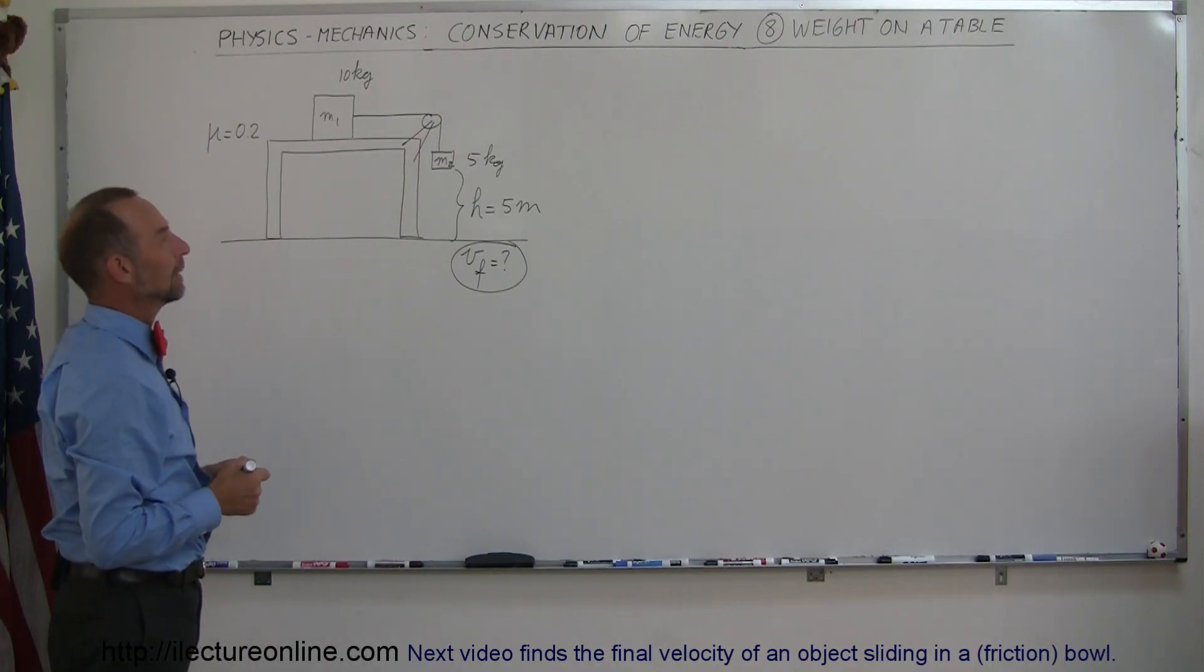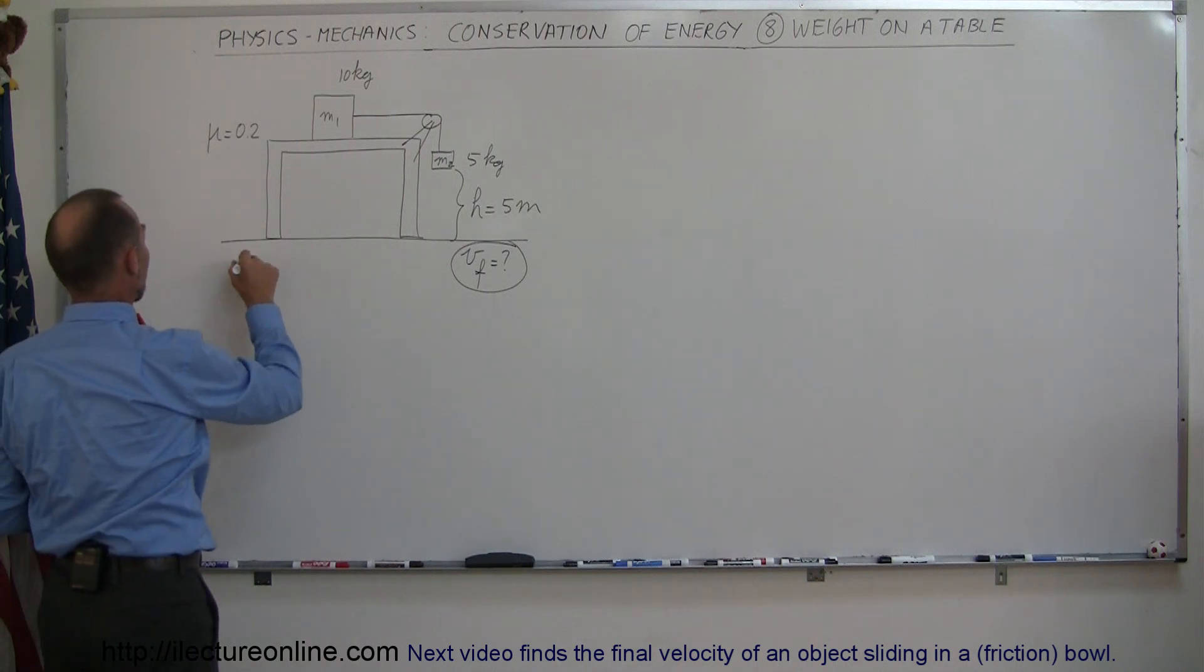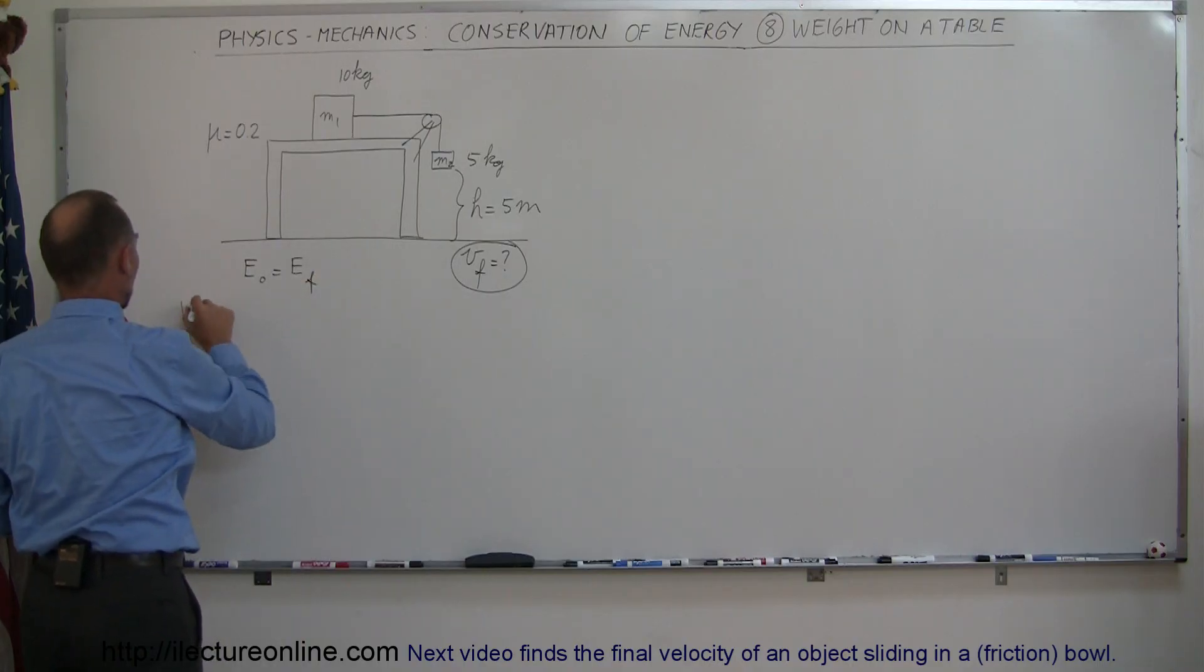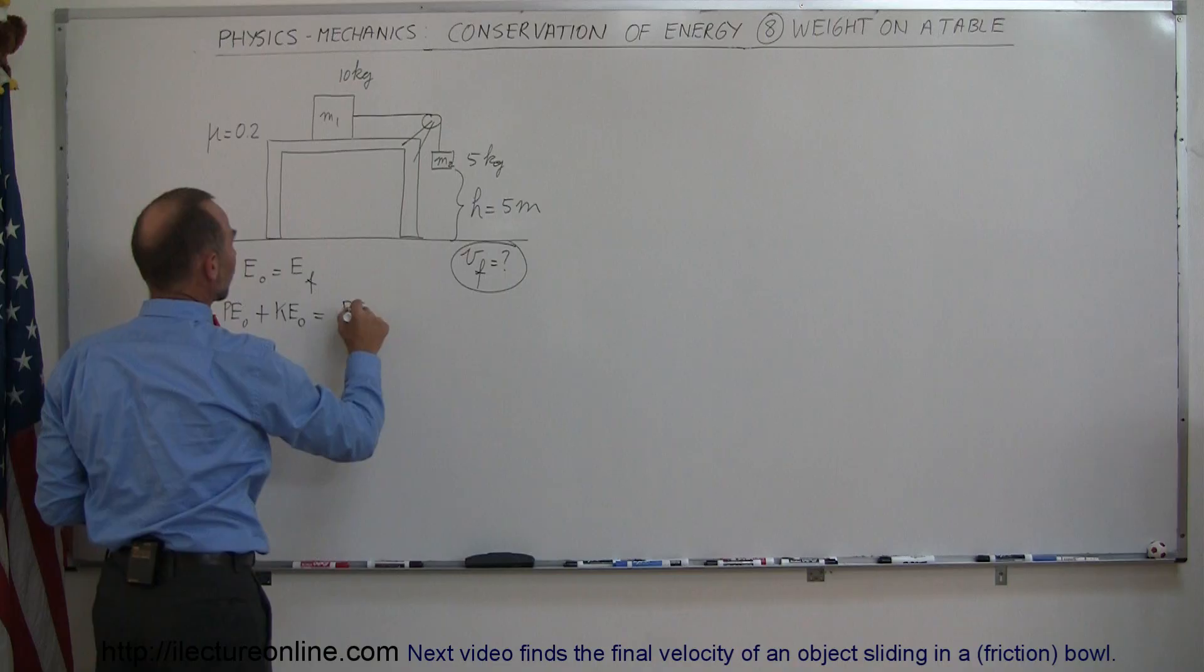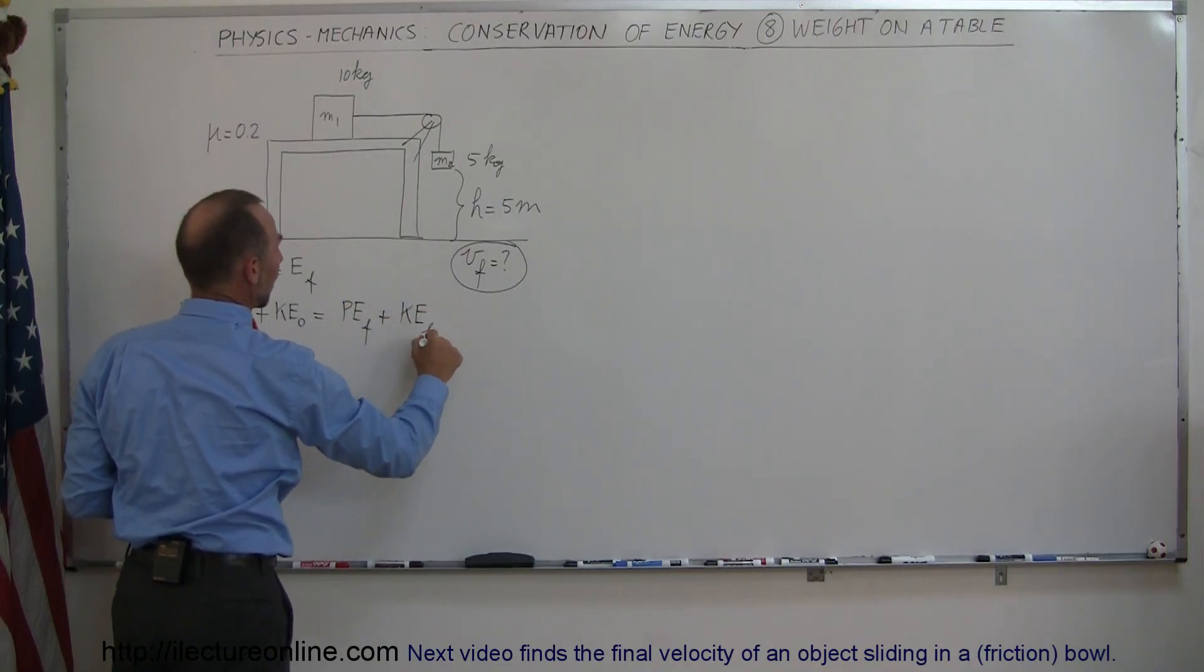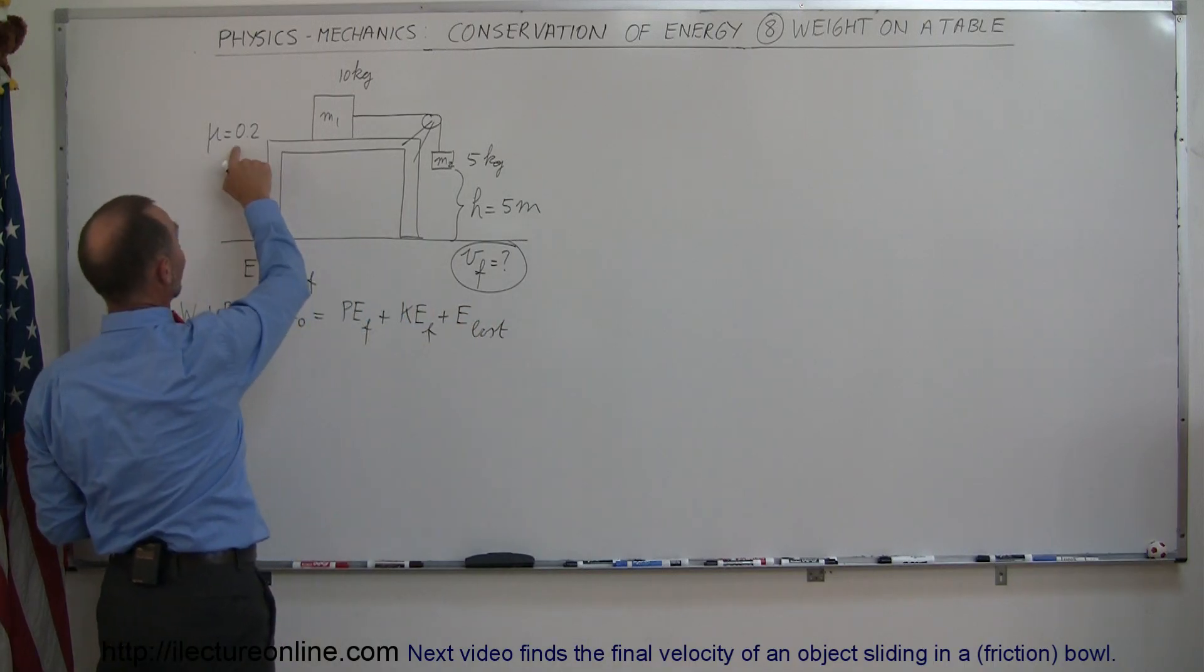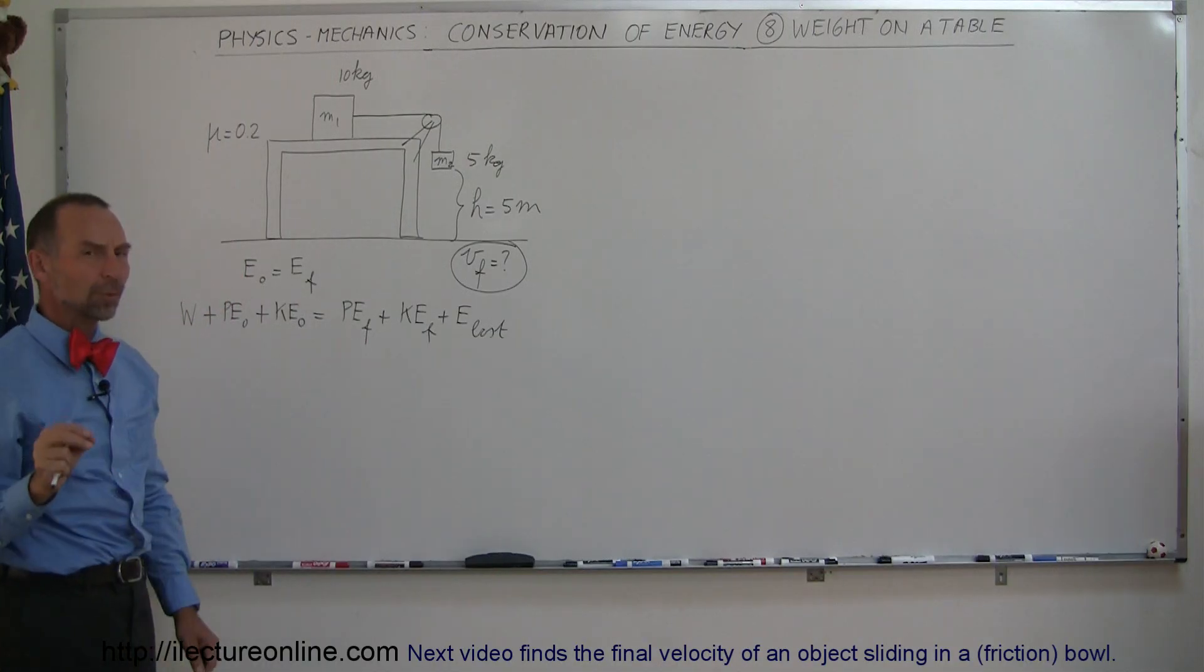How do we do that? Again we use the very same equation. We say that energy initial equals energy final. So we have potentially some work put into the system, plus some initial potential energy, plus some initial kinetic energy, and that should equal the final potential energy of the system, plus the final kinetic energy of the system, plus any energy loss due to overcoming friction. Of course in this case we realize, since there is friction there, we're probably going to lose some energy.